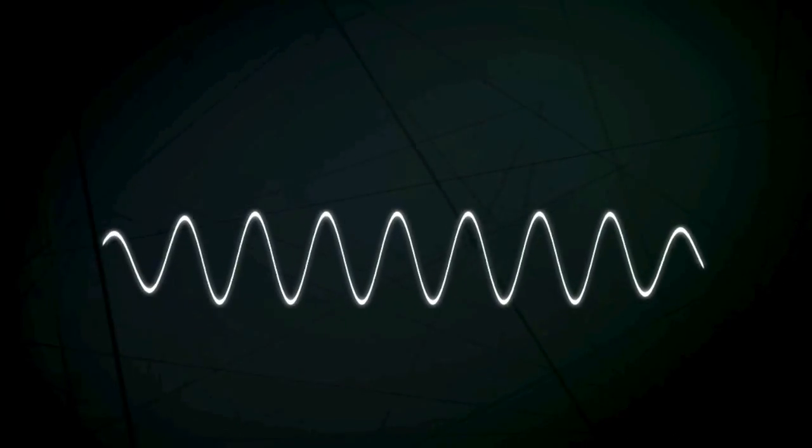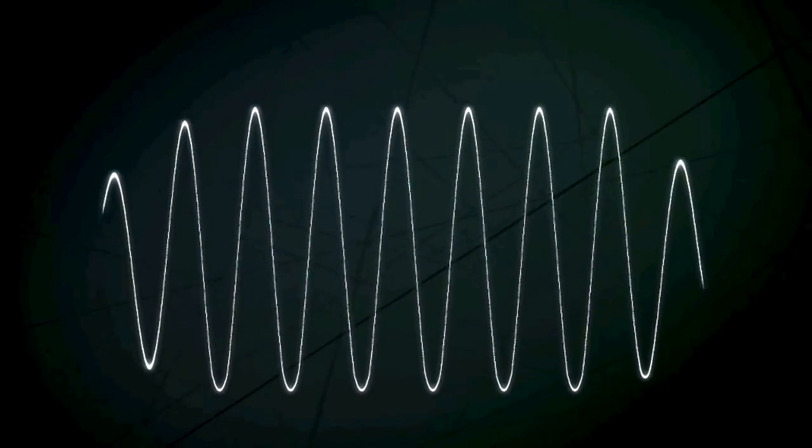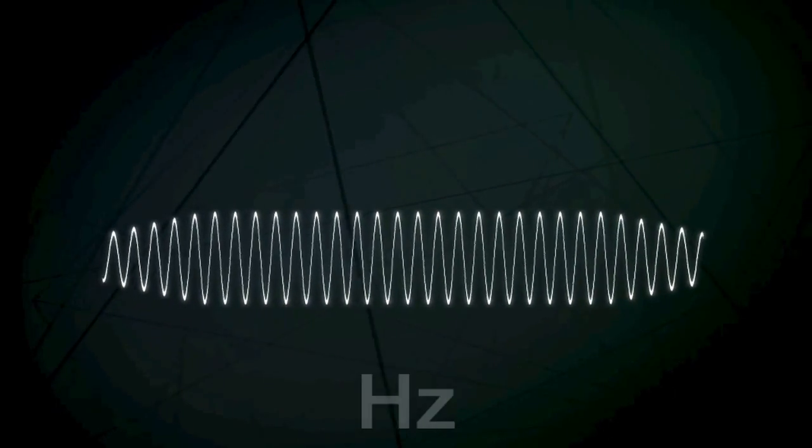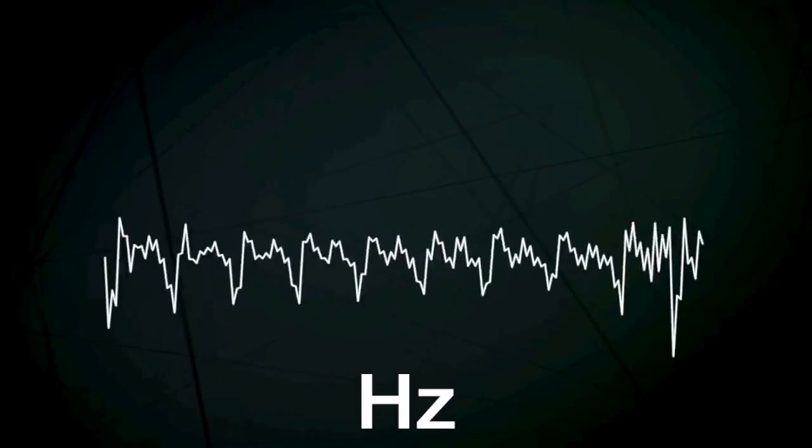To send complex signals, a sine wave can be used, which is continuously changed through modulation. The height or amplitude of the wave can be varied or its frequency, the number of wave crests per second, which is counted in hertz. The varying pattern carries the message.